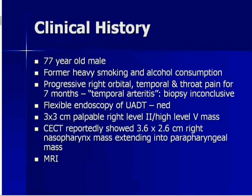They biopsied his temporal artery because they thought he had temporal arteritis. The biopsy was inconclusive. He had a flexible endoscopy of the upper aerodigestive tract that showed no tumor. On physical examination, he was found to have a 3-centimeter palpable mass in right level 2, high level 5. He had an outside scan from another institution that reportedly showed a 3.5-centimeter mass in the right nasopharynx that extended into the parapharyngeal space.